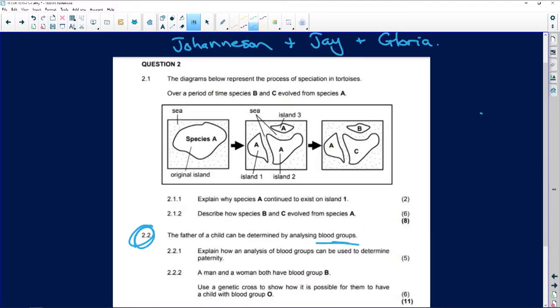All right, so if we look at the diagram below, it represents speciation. Now remember, a species is a group of organisms that live in the same area, that have the same genetic makeup or sequence, DNA sequence, they look similar.